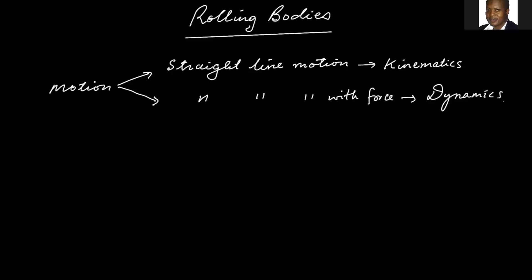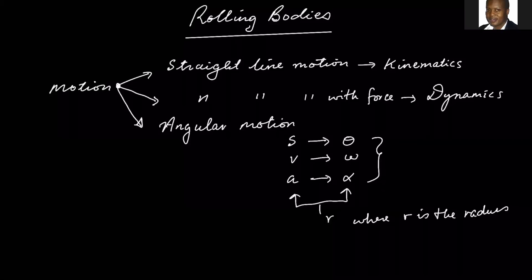We then also spoke about angular motion. And with angular motion, S, which is the displacement in linear space, turns to theta. V turns to omega, acceleration turns to alpha and so forth. And then we said that there's a relationship between this side and that side. The relationship will be the radius. We can relate V with omega by just multiplying it with r. We can relate acceleration with alpha by just multiplying it with r.